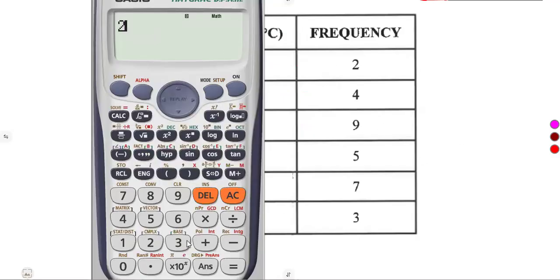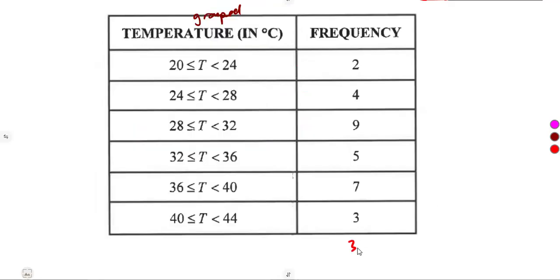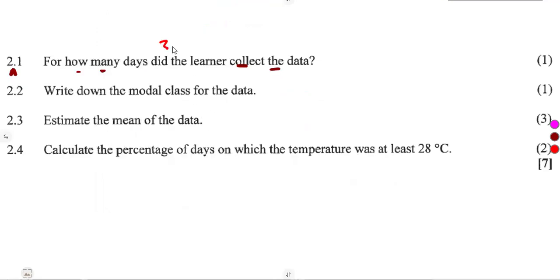If we are going to combine these, there's 2 plus 4 plus 9, then we move on to 5, to 7, to 3. We add everything. That's going to give us a total of 30. So, meaning to say, for 30 days.